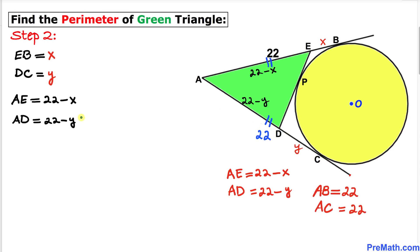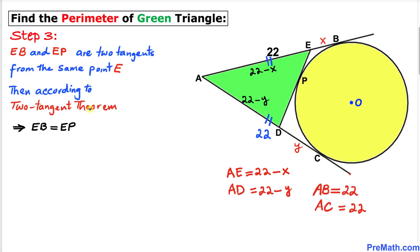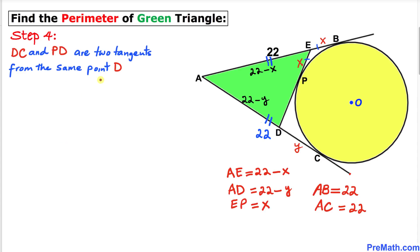In the next step, let's focus on the two tangents EB and EP. These are two tangents drawn from external point E. According to the Two Tangent Theorem, EB and EP are equal in length. Since EB is x units, EP is x units as well.